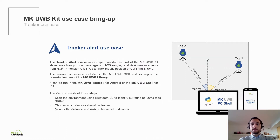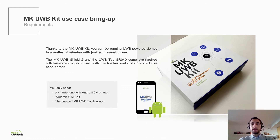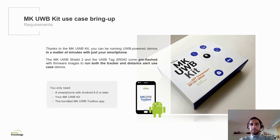Before we get started, let's see what we need in terms of hardware and software. Thanks to the MKUltra Wideband Kit, you can be running ultrawideband powered demos in a matter of minutes with just your smartphone. The MKUltra Wideband Shield and the MKUltra Wideband Tag SR040 come pre-flashed with firmware images to run both the tracker and distance alert use case demos, so you don't need to take any extra steps to get up and running. You only need a smartphone with Android 6.0 or later, your MKUltra Wideband Kit, and the bundled MKUltra Wideband Toolbox app. We'll have a demo in just a moment, but first let's see how the mobile app works.